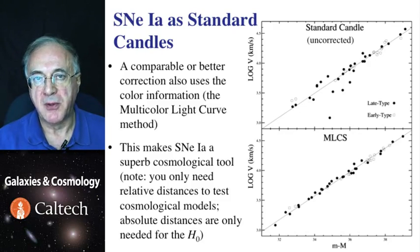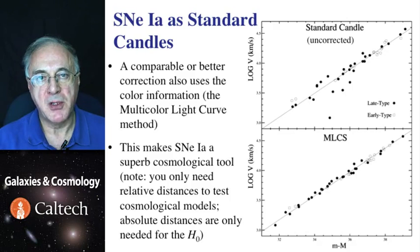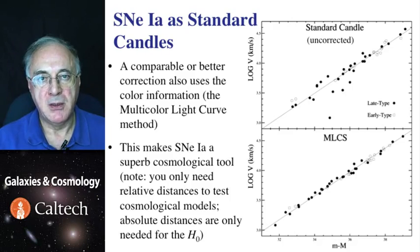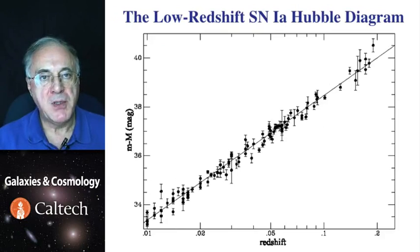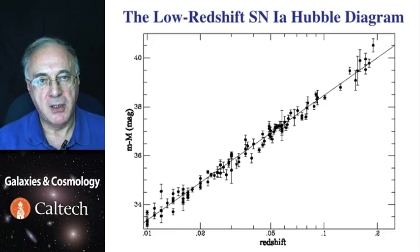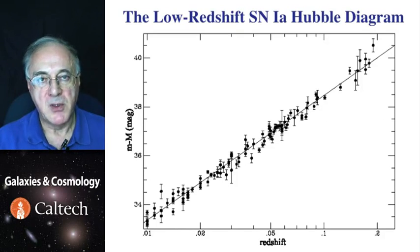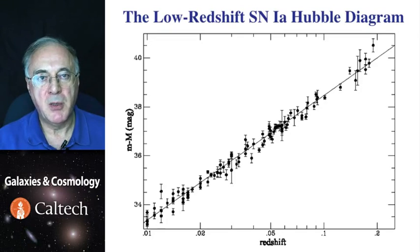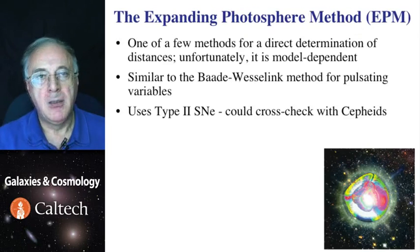Either way, supernovae of type Ia can be standardized so their peak brightness is nearly constant to within 10%. That's what makes them really useful as a cosmological tool, not just for the measurement of the Hubble constant, but also other cosmological parameters. For example, they have played a key role in the recent confirmation of the existence of dark energy. Here is an example of a type Ia supernova Hubble diagram, corrected for the stretch factor. The scatter is remarkably small — what's plotted is luminosity distance in the form of distance modulus versus redshift. It is as good a Hubble diagram as you ever hope to get.